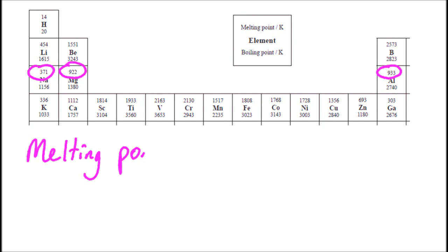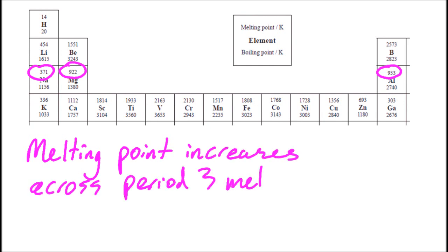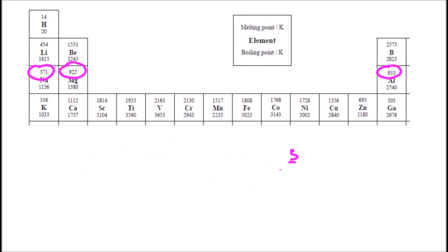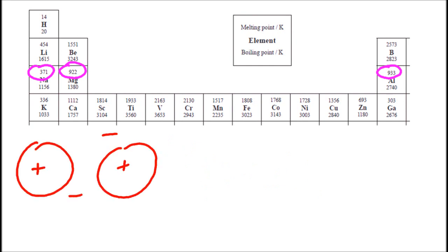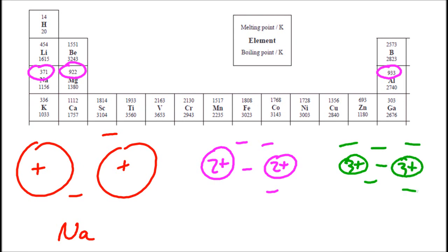Looking at the melting points, they increase as we go across period three, for the metals. We're not going to go any further than the metals. Aluminium having the highest melting point. Well, if I sketch out again sodium and then magnesium ions, 2 plus, and aluminium ions, 3 plus,